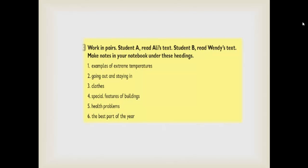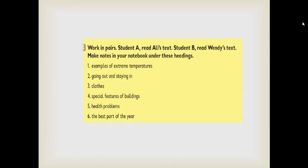Now after that, work in pairs. Student A read Ali's text and student B read Wendy's text. Here we have two texts: the first one is for Ali and the second one is for Wendy. Make notes under these headings: number one, examples of extreme temperature; going out and staying in; number three, clothes; special features of buildings; number five, health problems; and finally number six, the best part of the year. After reading we want to take some notes relating to these six topics. Let's read.